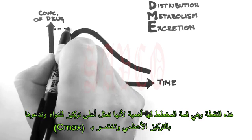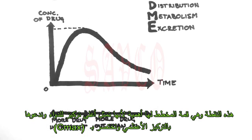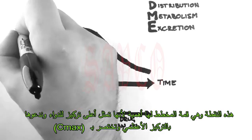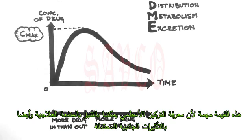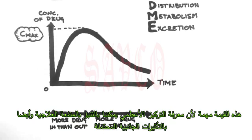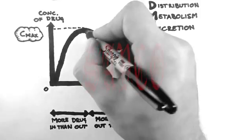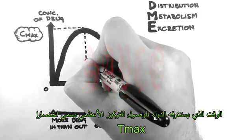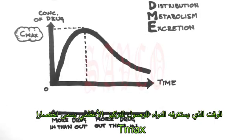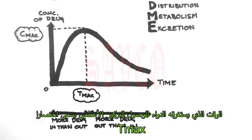This point at the top of the graph is important, because it is the highest concentration of drug in the body. Therefore, we call this the maximum concentration, or C-max. This is important because knowing the maximum concentration can help predict the therapeutic benefit and also the likelihood of side effects. The time at which the maximum concentration occurs is called T-max.